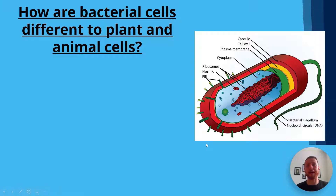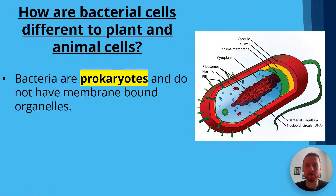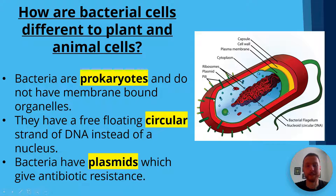So how are bacterial cells different to plant and animal cells? Well, bacterial cells don't have a nucleus or a nuclear membrane around their genetic material. Their genetic material just floats freely, and they're smaller and more simple than eukaryotic cells. So bacteria are what we call prokaryotes, and they do not have membrane-bound organelles. They have free-floating circular DNA instead of a nucleus, and we can see that here in red. Finally, bacteria have plasmids, which give antibiotic resistance — a plasmid is a small loop of DNA within the bacteria.